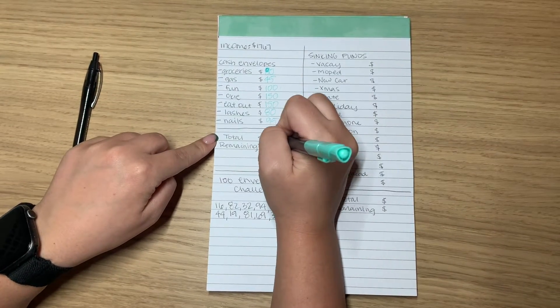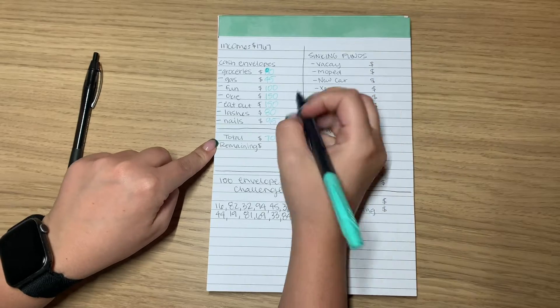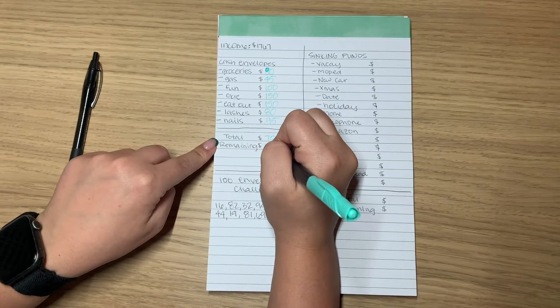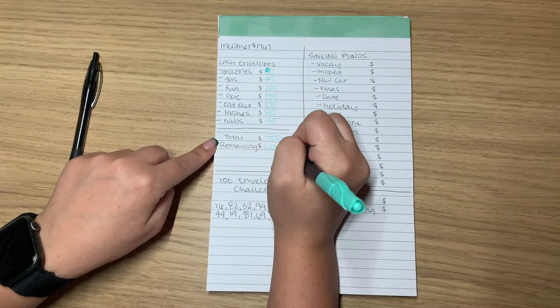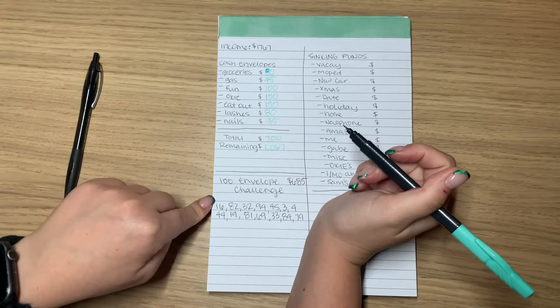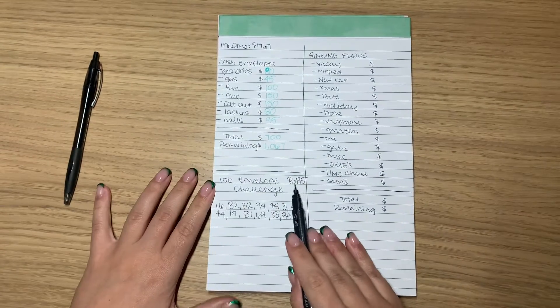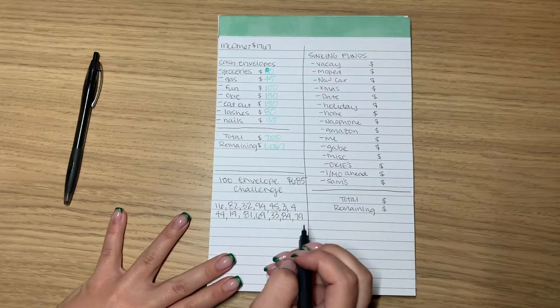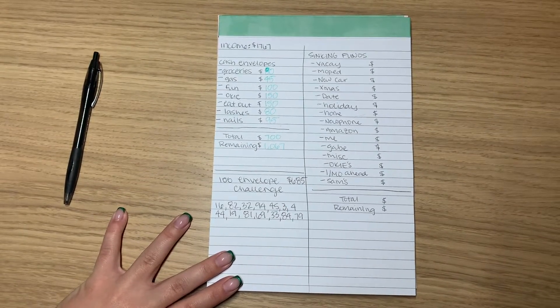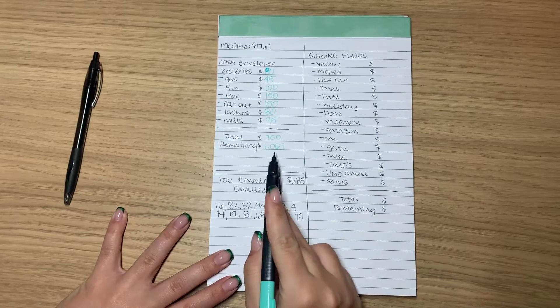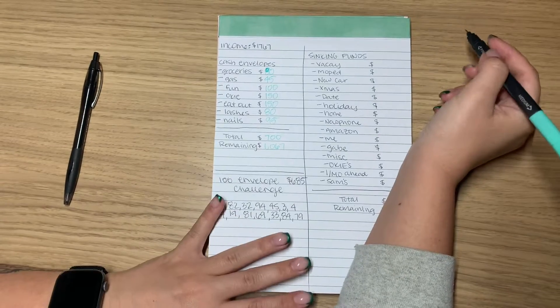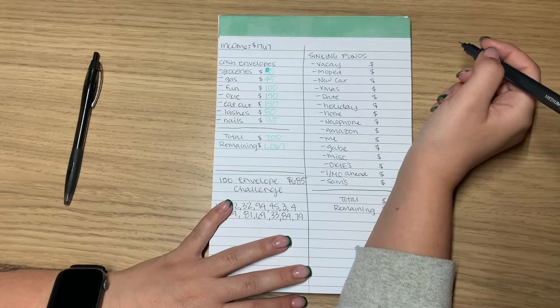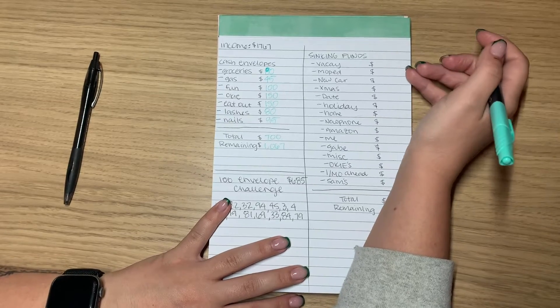Anyway, the total for this is $700. I have $1,067 left over after my cash envelopes. I've already added this up because again, I didn't have a calculator. So this is $685. I didn't add up how much I had left from that, but we'll do this. So you'll be able to see which ones are my priority right now.